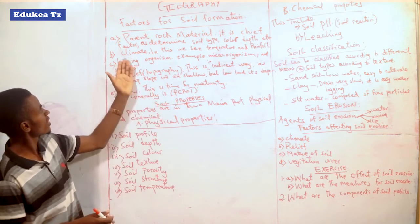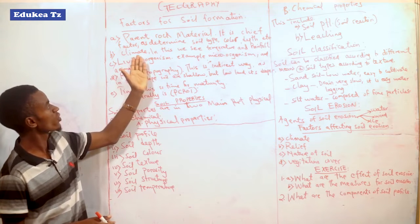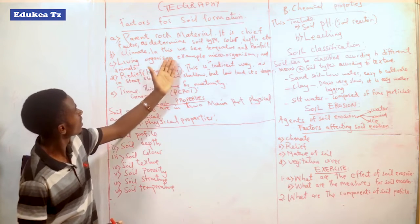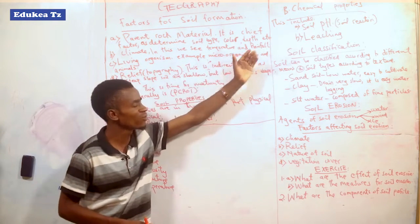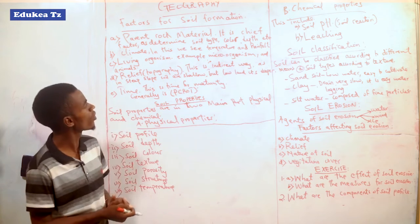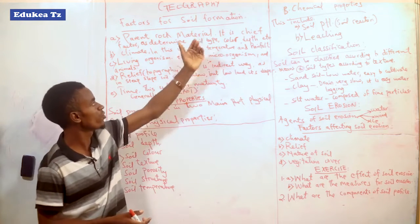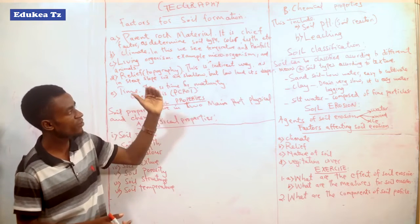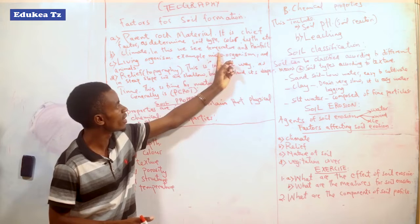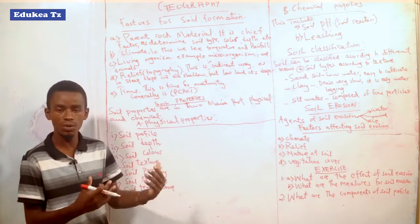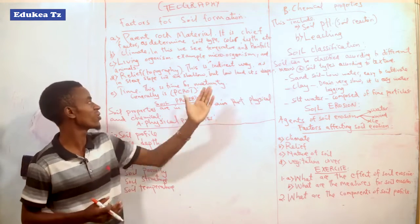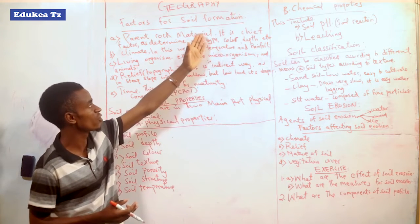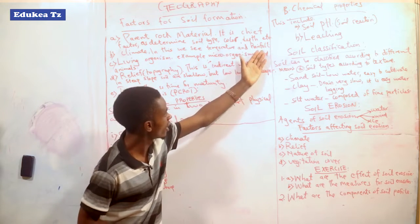Another factor is climate. In climate, we consider those elements of climate — for example, temperature and rainfall. The temperature and the rainfall influence how soil is formed. In terms of temperature, I told you earlier that there are materials which are being decomposed. Those materials which are being decomposed depend on the temperature. Temperature is among the things which help the soil to be formed. Also there is rainfall.